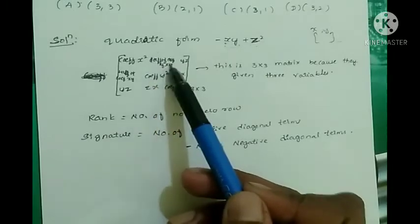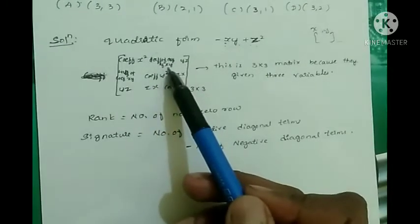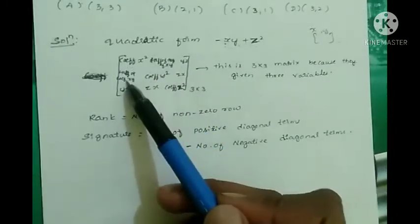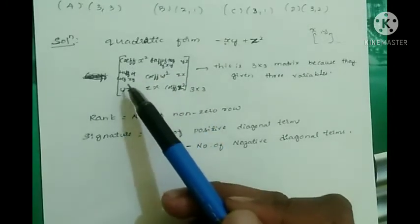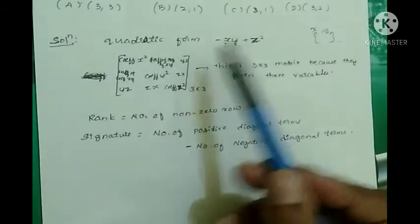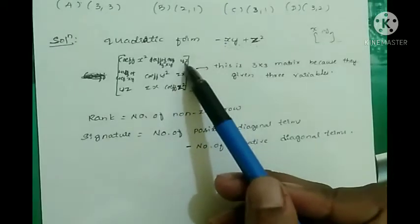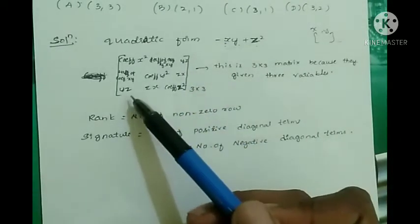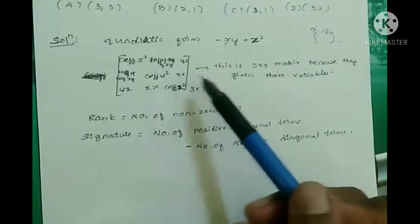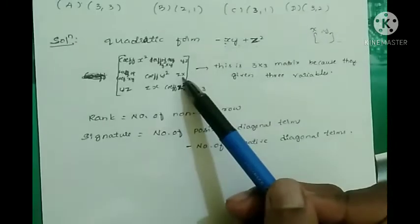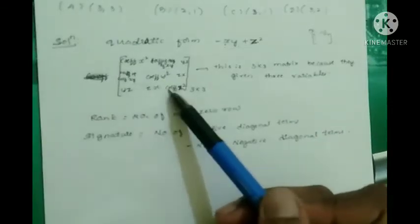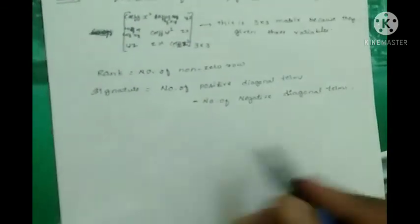For the off-diagonal entries, we use half the coefficients of the cross terms. Specifically, we place half the coefficient of xy, half the coefficient of yz, and half the coefficient of zx in the appropriate off-diagonal positions to construct the symmetric matrix.